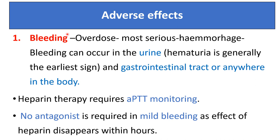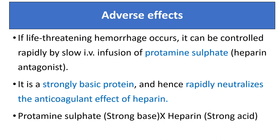Adverse effects of heparin: first is bleeding. Overdose can cause serious hemorrhagic bleeding in the urine, gastrointestinal tract, and anywhere in the body. The first sign of bleeding is hematuria, and therapy should be stopped when the first sign appears. APTT monitoring is required during heparin therapy. No antagonist is required in mild bleeding, as the effect of heparin disappears within an hour. But in severe life-threatening hemorrhage, it can be controlled rapidly by slow IV infusion of protamine sulfate. Protamine sulfate is the antagonist of heparin — it is strongly basic and rapidly neutralizes the anticoagulant effect of heparin.